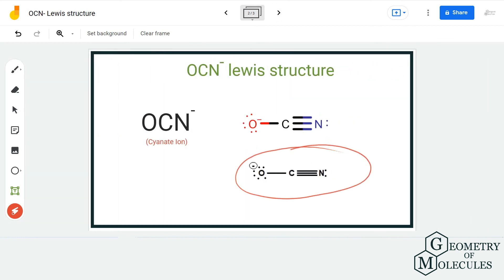So this is the OCN⁻ Lewis structure in which carbon forms a triple bond with nitrogen atom and a single bond with oxygen atom. If you calculate the formal charges for this molecule, you will find that the formal charges for carbon and nitrogen are both zero and oxygen has a minus one charge.